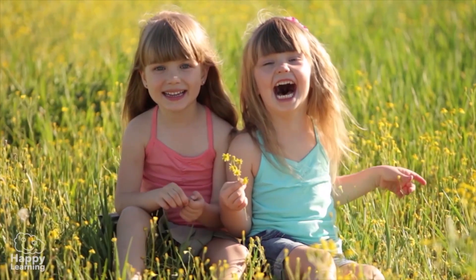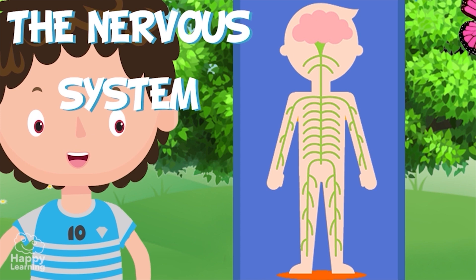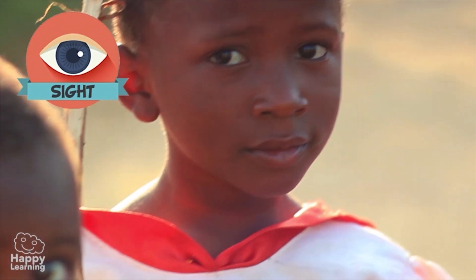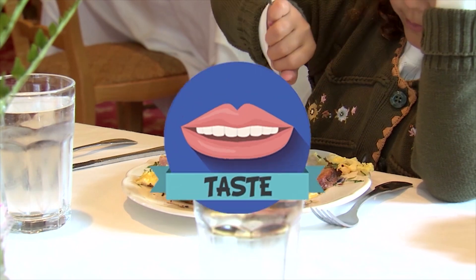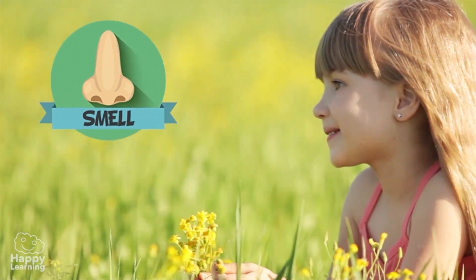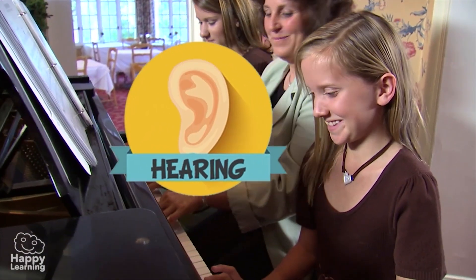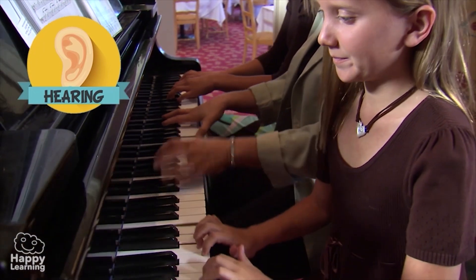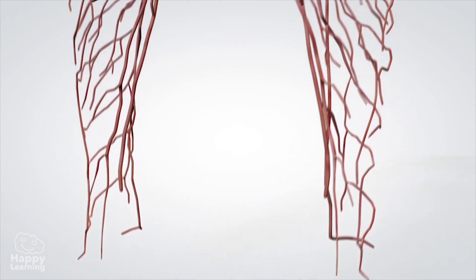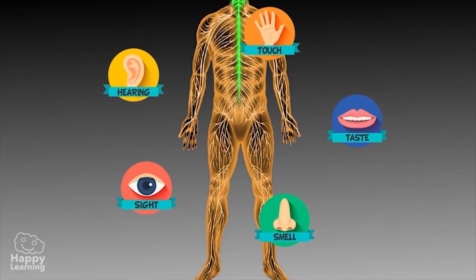Hello friends and welcome to a new Happy Learning video. Today, we are going to learn all about the nervous system. We all know that humans have five senses: sight, which is the ability to see through our eyes; taste, which is what we use to enjoy different flavours; smell, which allows us to smell the wonderful scents in flowers; hearing, which we use to listen to our favourite music; and touch, which is how we feel tickles or soft caresses through our skin. Our nervous system is what receives all the information captured by these senses, interprets it, and responds to each situation.